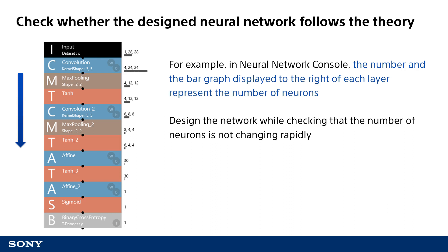When designing a neural network, you can decrease excess trial and error by checking whether this type of theory is being followed at the design stage. For example, in the neural network console, the number of neurons in each layer is displayed to the right of each function at the neural network design stage. This graph is similar in shape to the figure shown earlier. You can check whether the configuration has the number of neurons increasing immediately after input and then gradually decreasing.